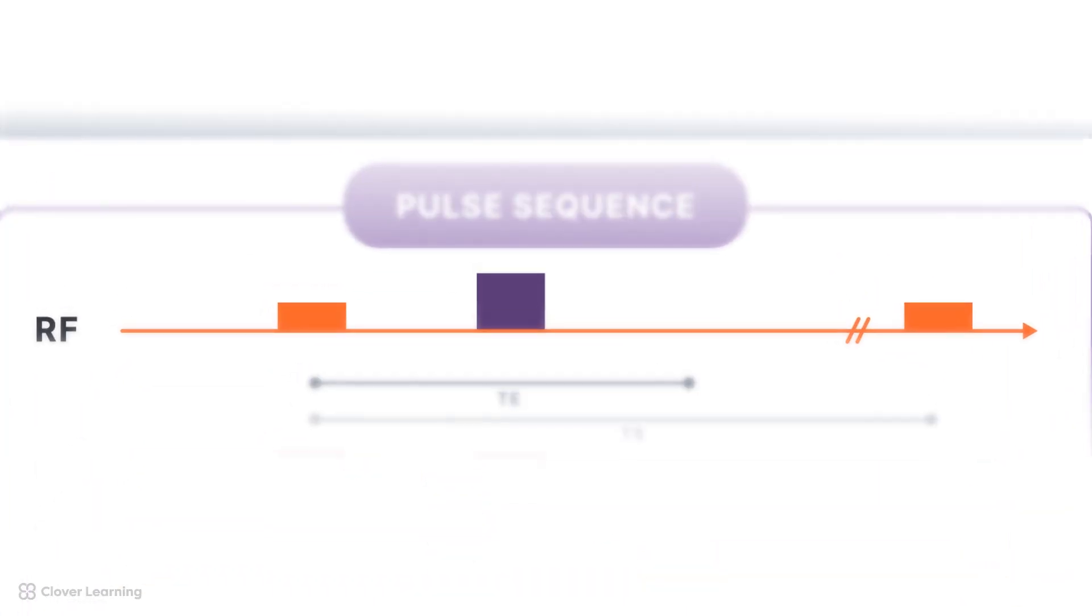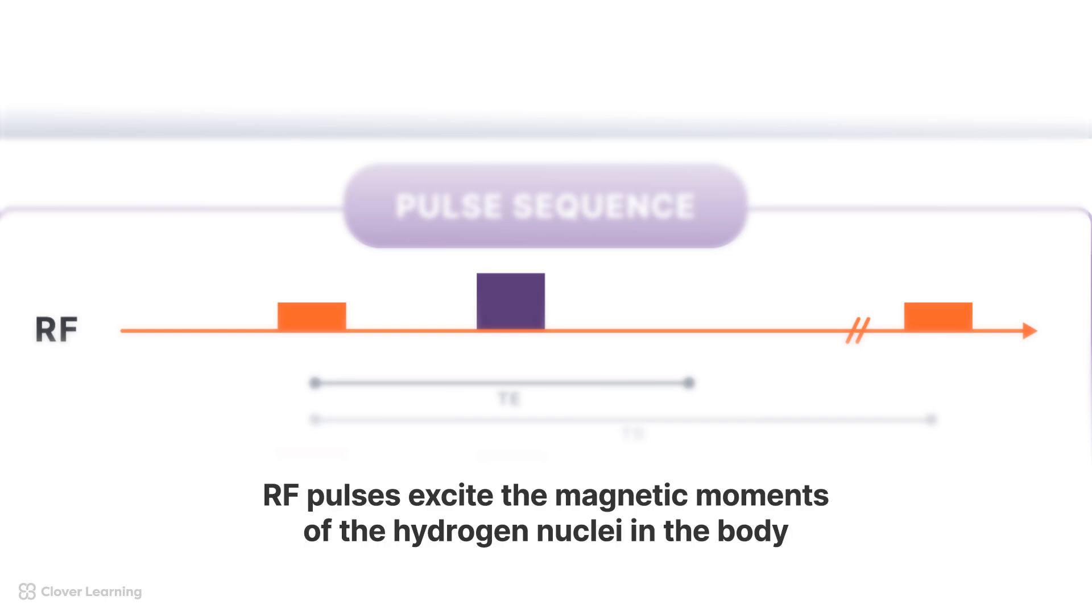The first line in a pulse sequence diagram depicts the RF pulses. Remember, RF pulses excite the magnetic moments of the hydrogen nuclei in the body. In a pulse sequence diagram, these are usually represented as a sine wave or a block.